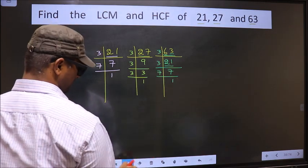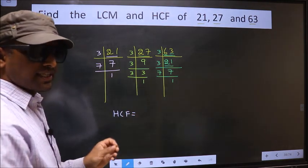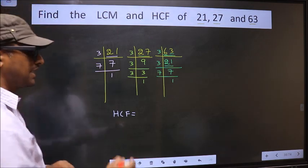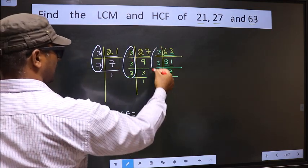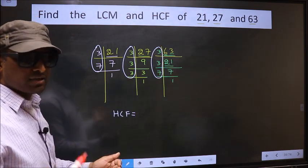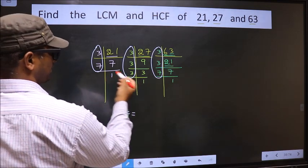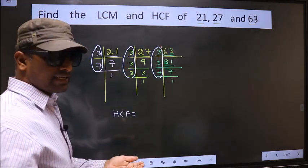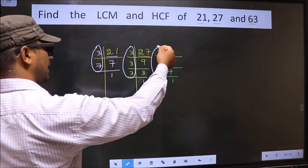Now our HCF is the product of numbers which should be present over here and here and also here. I repeat, HCF is the product of numbers which should be present in these 3 places. Here, here and also here. So now let us find the numbers which are present here, here and also here.